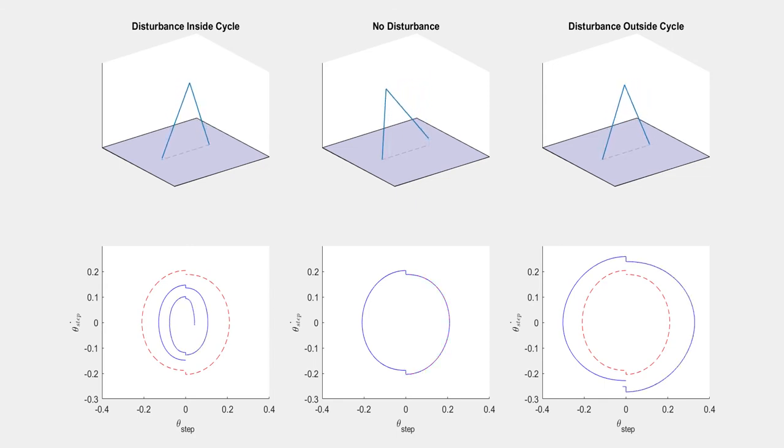However, perturbations away from the cycle cause the system to diverge. To stabilize the orbit, we will need to add the transverse controller.